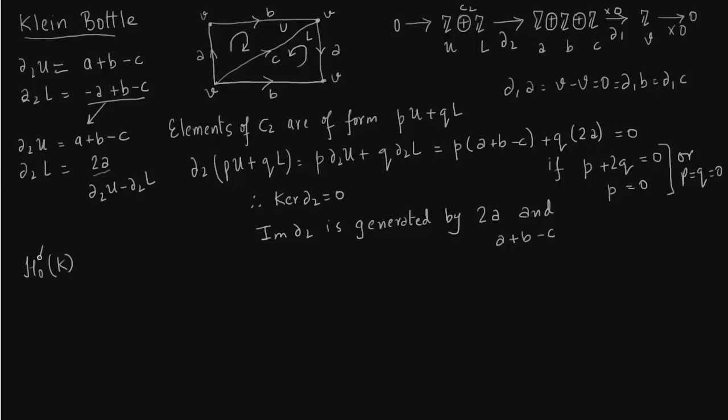So H0 of the Klein bottle for the delta complex, this is really easy. So this is nothing but kernel of delta 0 over image of delta 1. We have seen image of delta 1 is multiplication by 0. And kernel of delta 0 is just Z which is generated by vertex V. So this will be Z.